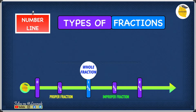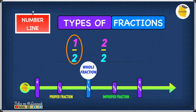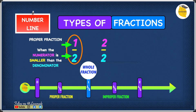Let's have a look at the two fractions we're going to compare, which are 1 over 2 and 2 over 2. Let's start with 1 over 2 first. In 1 over 2, let's have a look at the numerator, which is 1, and the denominator, which is 2. As we know, 1 is smaller than 2, so 1 over 2 is a proper fraction.